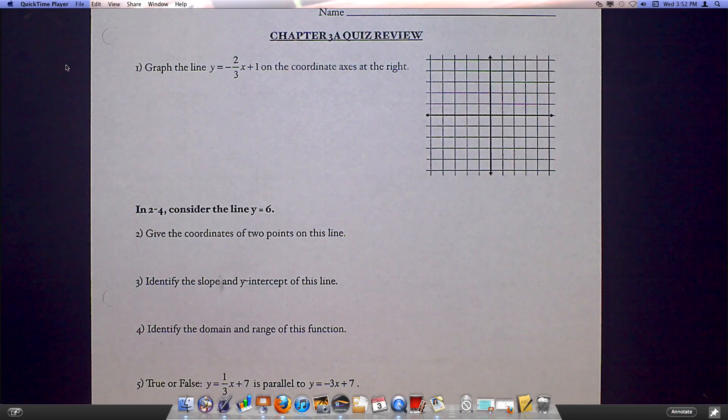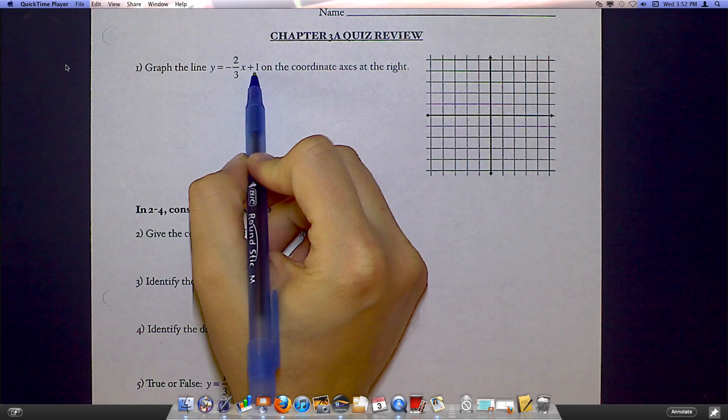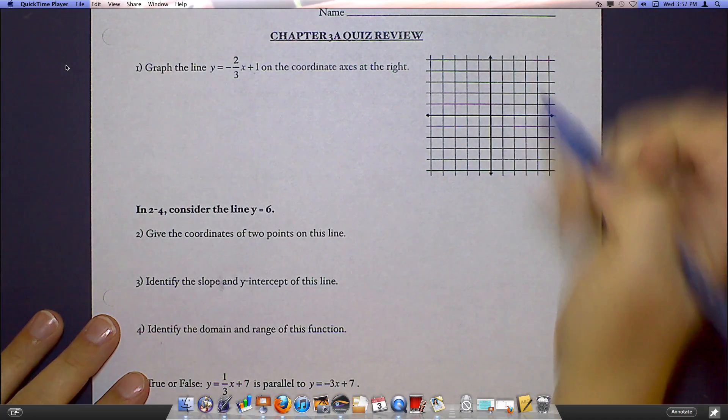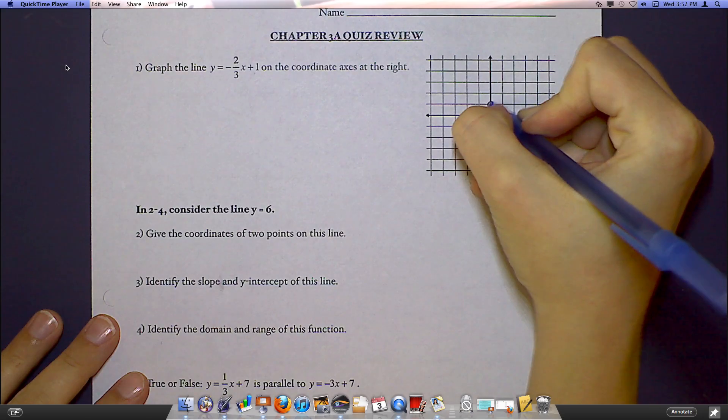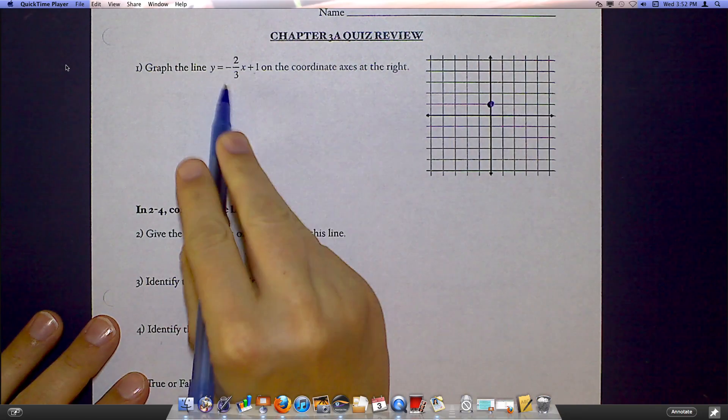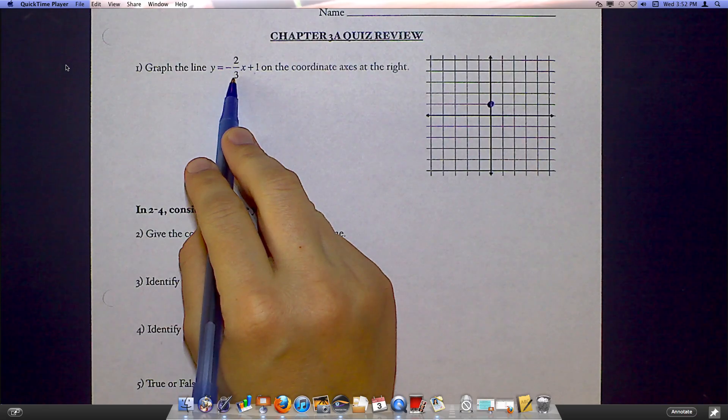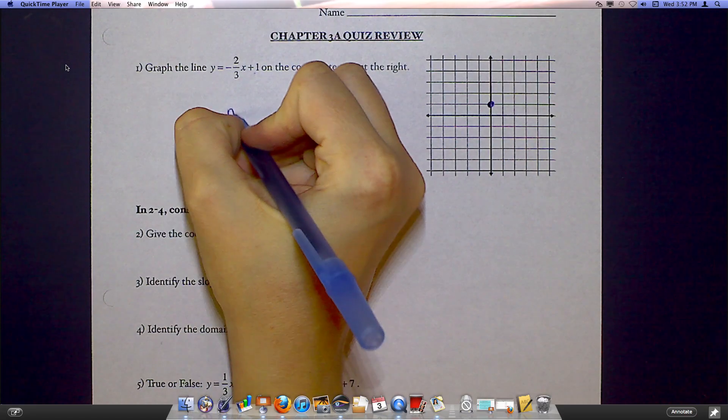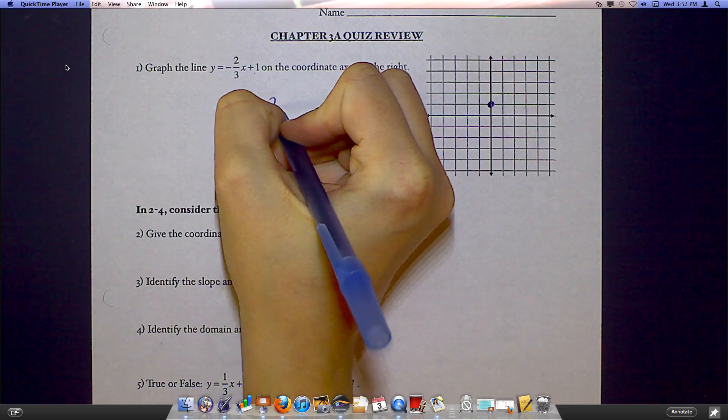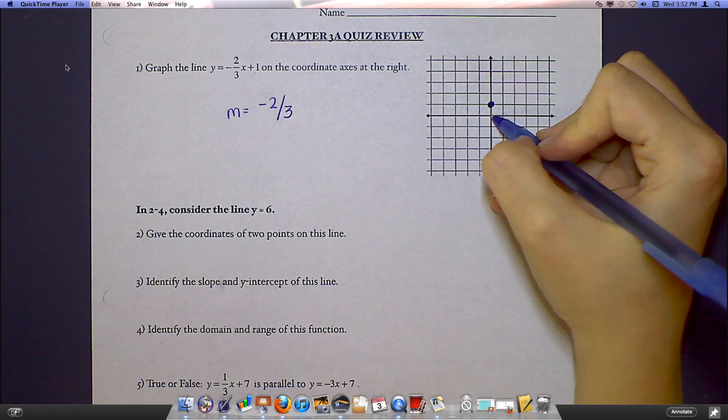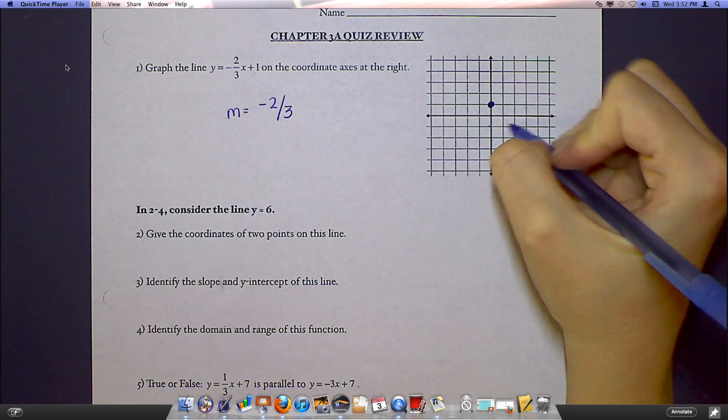To graph the line y equals negative two-thirds x plus one on the coordinate plane, remember when you're graphing a line, you always want to start at your y-intercept, and that goes on the y-axis. So I would put a dot at one, and now my slope is negative two-thirds. Remember that negative can go on the top or the bottom. So I'm going to think about my slope as being negative two over positive three. That would mean from here, I would go down two and to the right three.